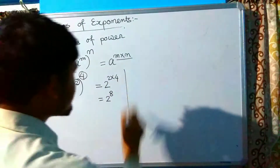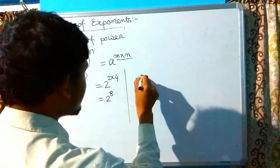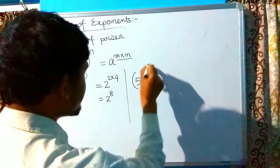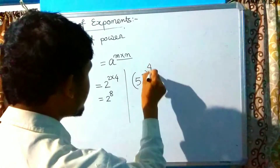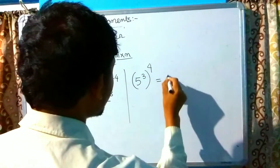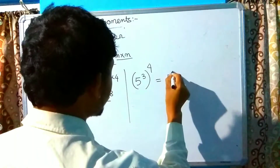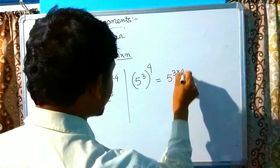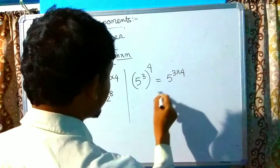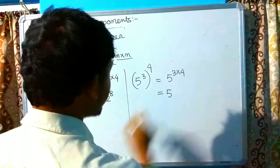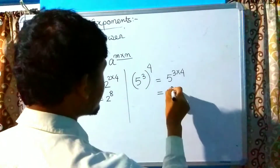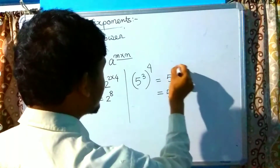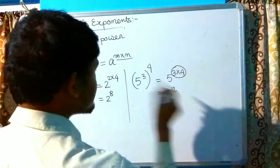Another example: 5 raised to the power 3, whole raised to the power 4, equals 5 raised to the power 3 multiplied by 4. Since 3 multiplied by 4 is 12, the answer is 5 raised to the power 12.